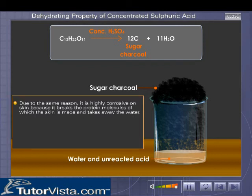Due to the same reason, concentrated sulfuric acid is highly corrosive on skin because it breaks the protein molecules of which the skin is made, and takes away the water.